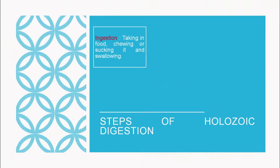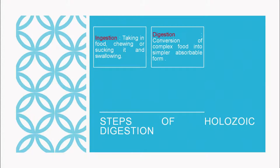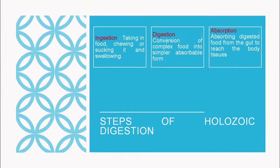Let us move on to digestion. There are five major steps in the holozoic digestion process. First is ingestion — taking in food by chewing, sucking or swallowing. Then digestion, where food is converted into smaller, simpler, absorbable forms. Then absorption — absorbing the digested food from the gut to reach the body tissues.